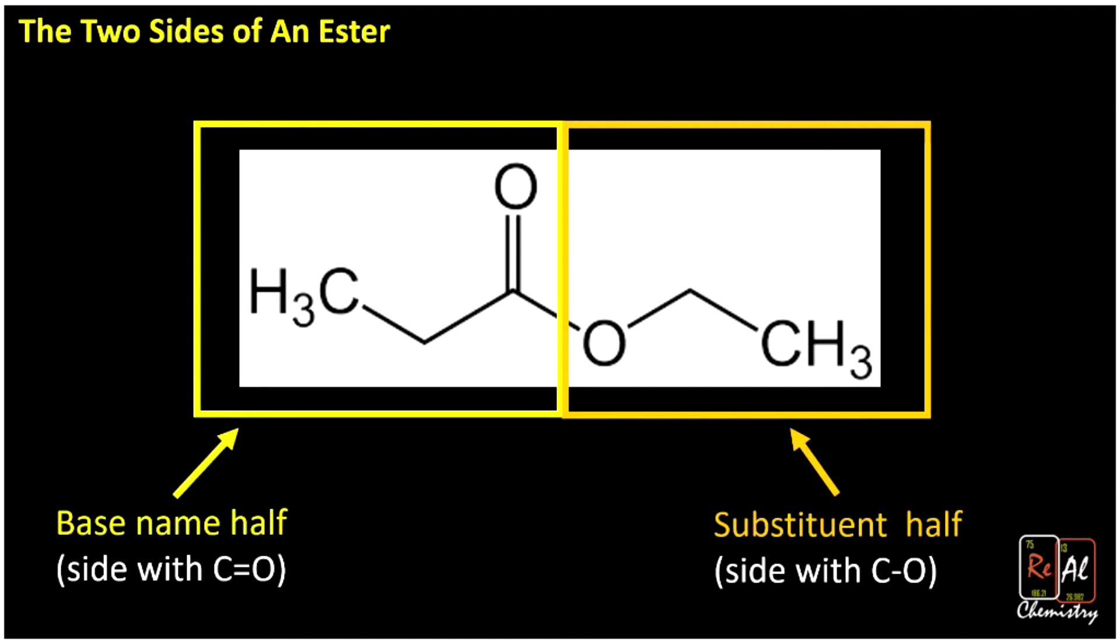It's going to have YL at the end, like a methyl group or an ethyl group, and it's going to get tacked on the front as if it were a substituent. So we're basically going to treat the orange box as if it were a substituent and the yellow box as if it were the base name. Let's go through this step by step.